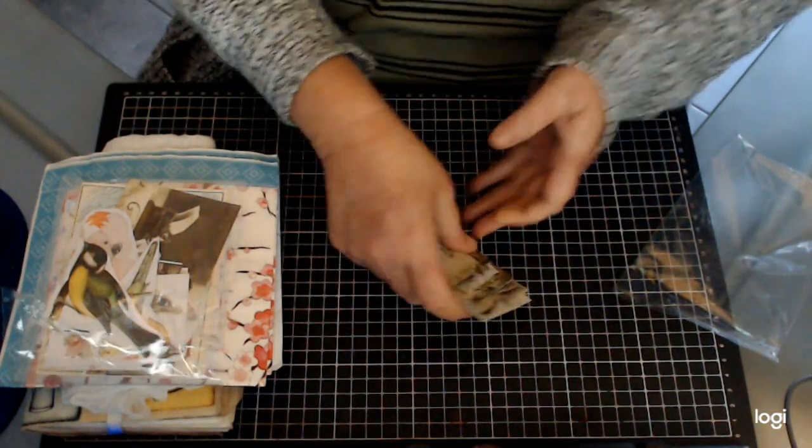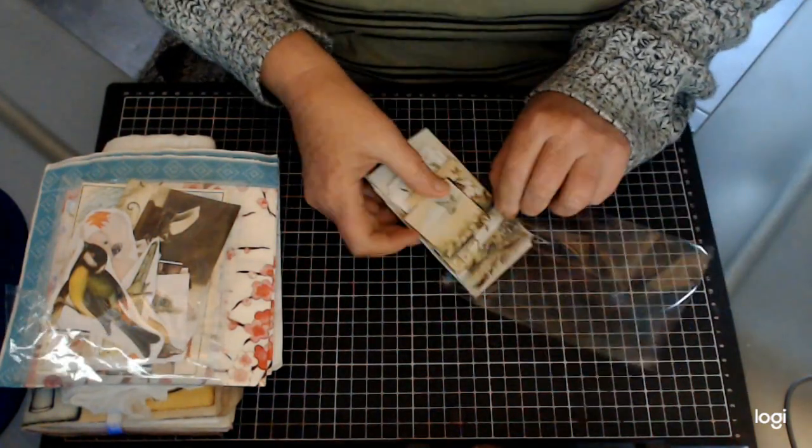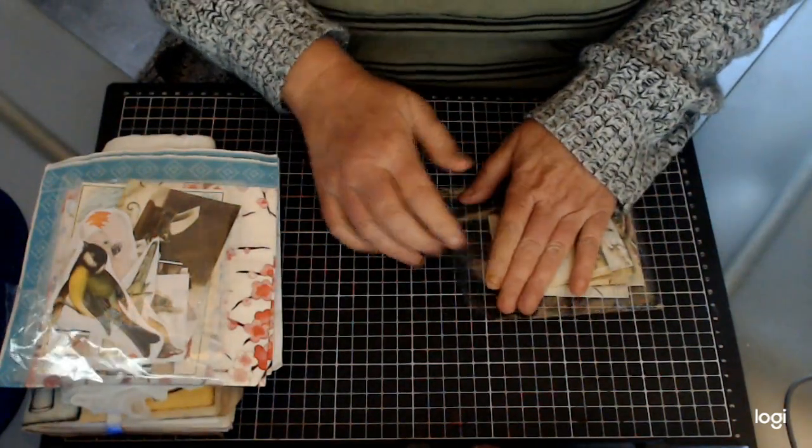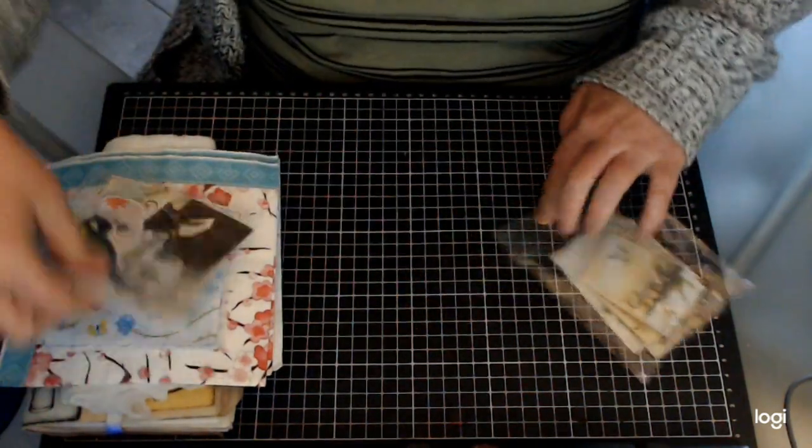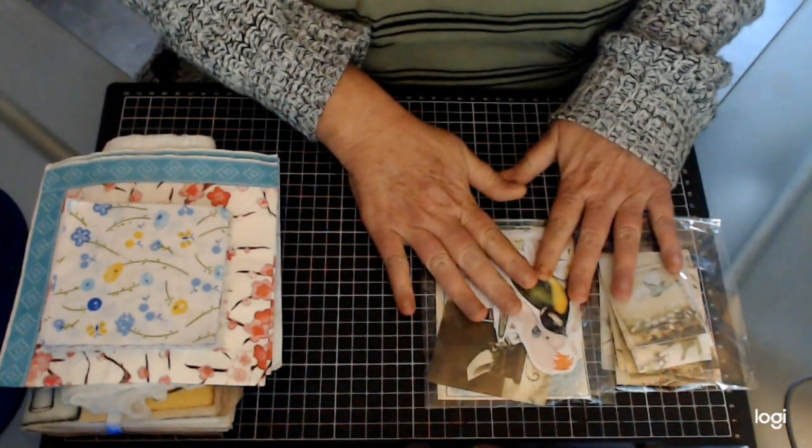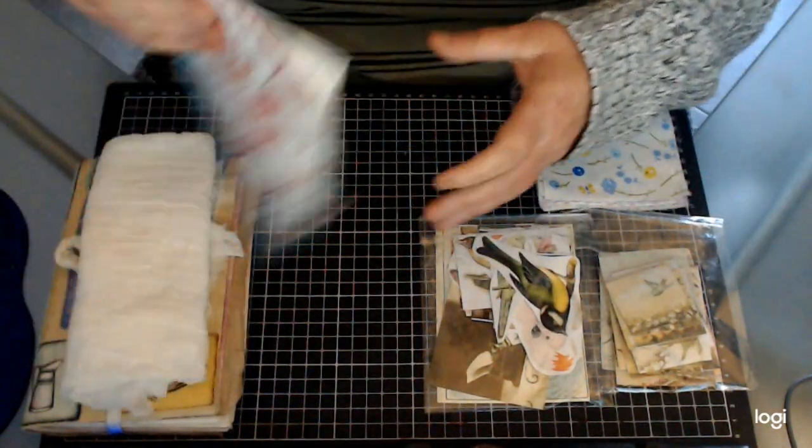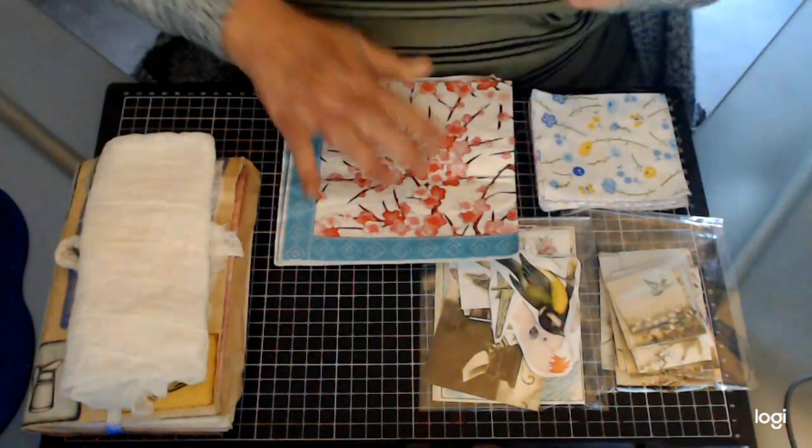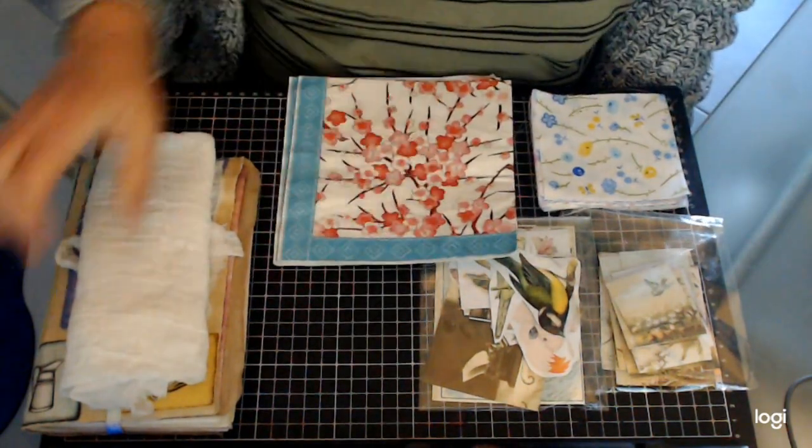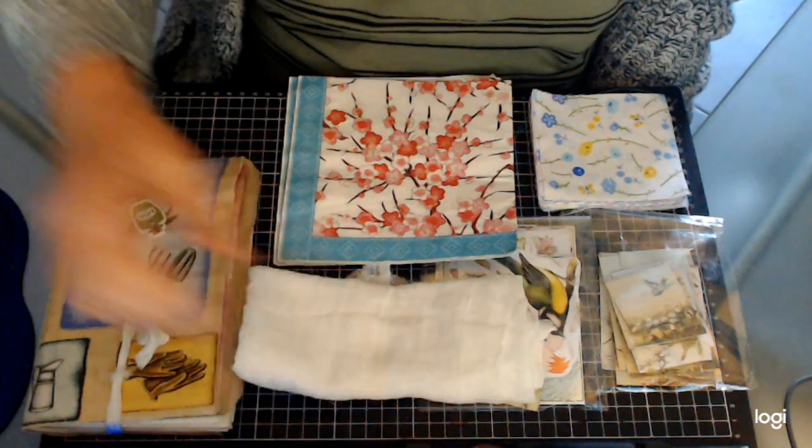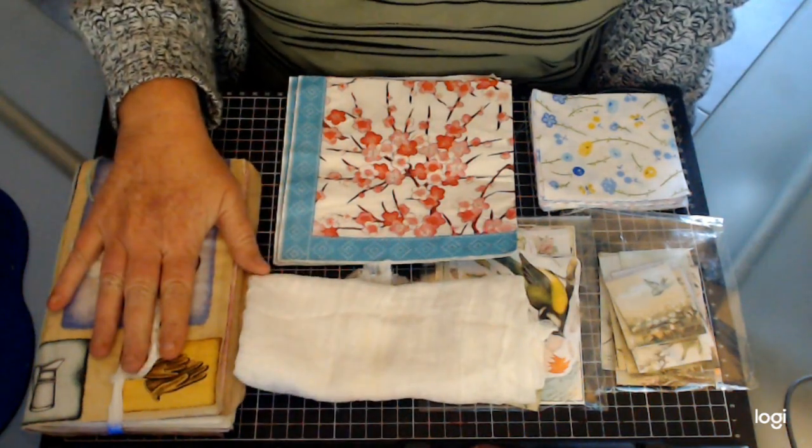So I hope that's enough for a giveaway. Obviously I've not done a giveaway before. So there's the ephemera, the pockets, the fabric, the napkins, the cheesecloth and the journal.